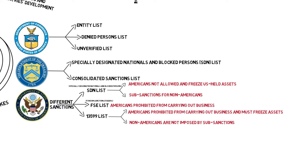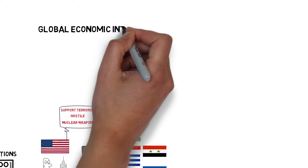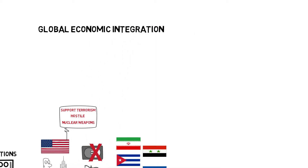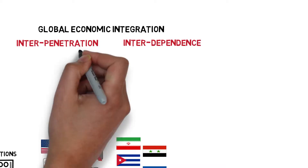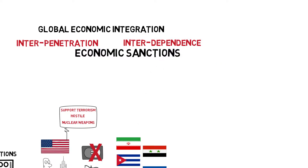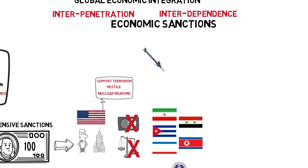In today's world, the process of global economic integration is speeding up, and the economies of different countries are becoming more defined by interpenetration and interdependence. Economic sanctions can carry out a precision strike against countries that have integrated into the global economy. But economic sanctions can also have an impact on the economies of the United States and its allies, and non-allies can resist unilaterally imposed U.S. policies.